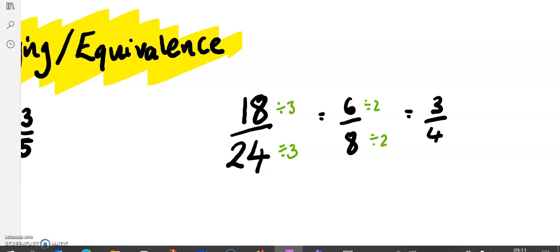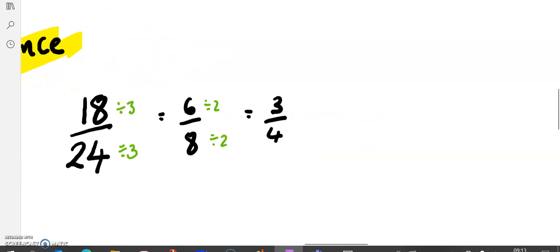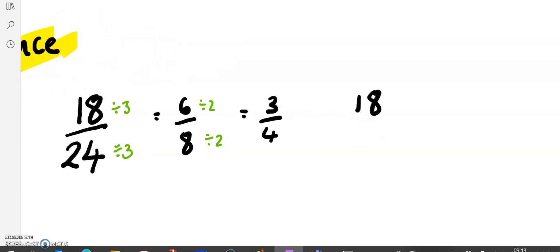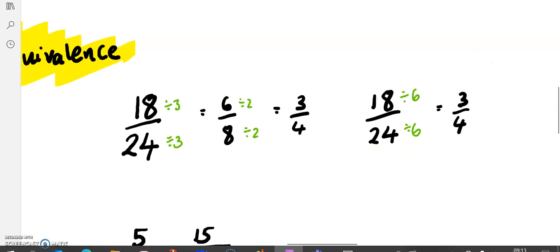Notice in this question, it took two steps to simplify it. You could have done it in one step. To do it in one step, you just need to identify the highest common factor, that being the biggest number that goes into both. These are actually both in the 6 times table. So we can divide both by 6, and then we're going to get 3 quarters. We're not really that bothered how many steps it takes, as long as you can get to the simplest form.